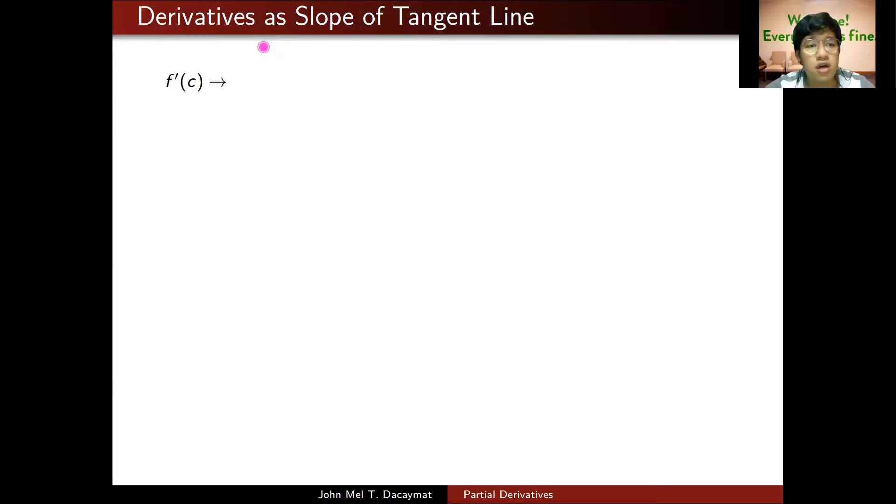Before, you discussed the geometric interpretation of the derivative of a function at x equals c, and f prime of c is interpreted as the slope of your tangent line to the curve y equals f of x at the point (c, f(c)). You learned from the lecture that this has an analogous geometric interpretation in terms of partial derivatives.